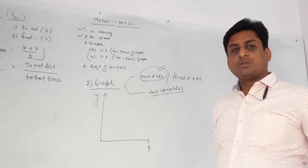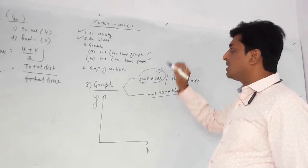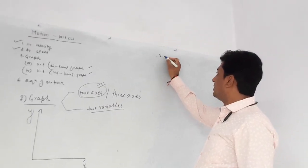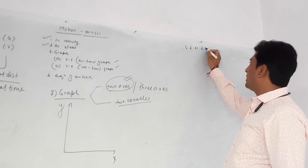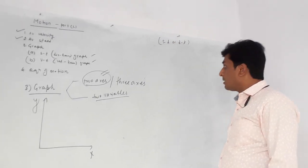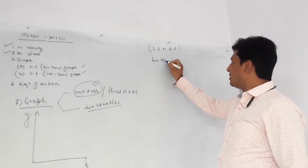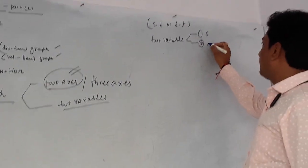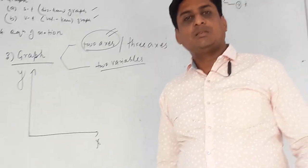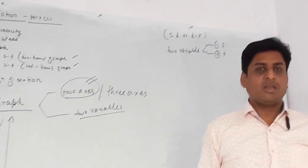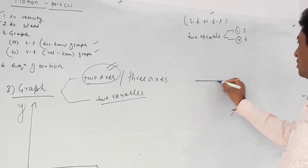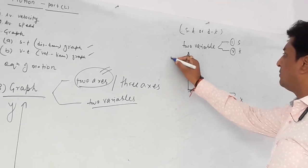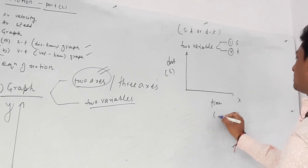In the distance-time graph — sometimes written as d-t or s-t graph — the two variables are distance and time. It depends on you which axis you take for each, but for convenience we always take time on the x-axis and distance on the y-axis. This is s, this is t. The direction in which values increase is shown, and the origin is at the intersection.